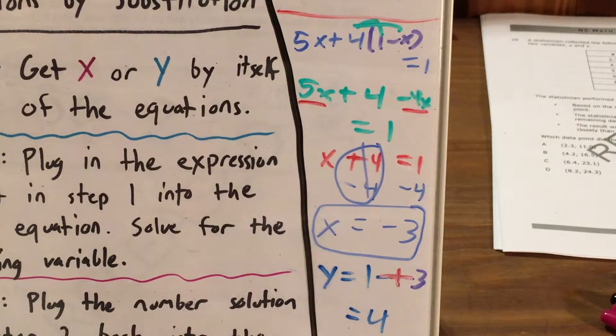Now, once again, we didn't need to find y, we just needed to find x. We found out that it was negative 3. But for the sake of completing the problem, if you had to find both your x and your y, that would be how you would finish up a problem like that.